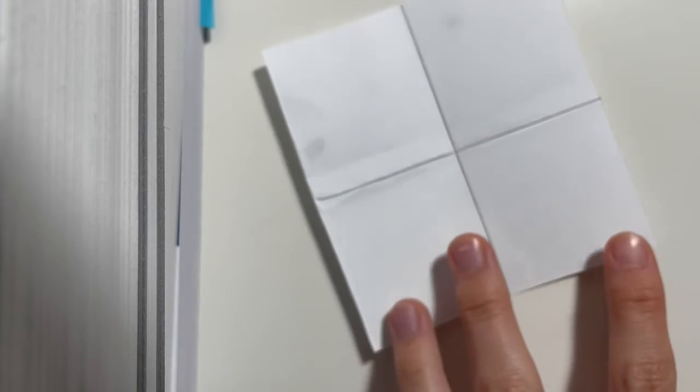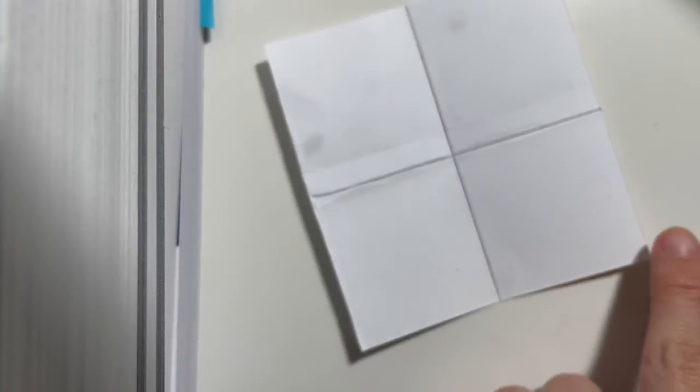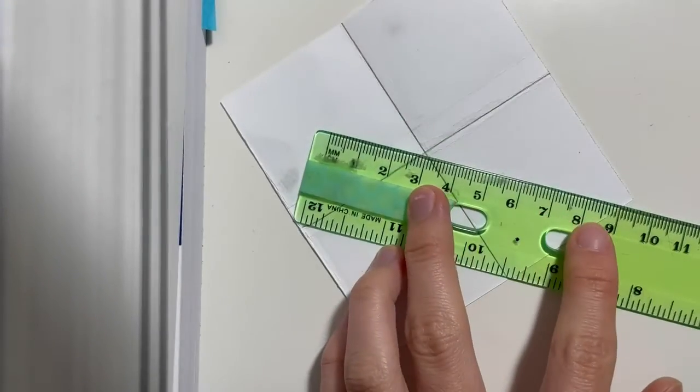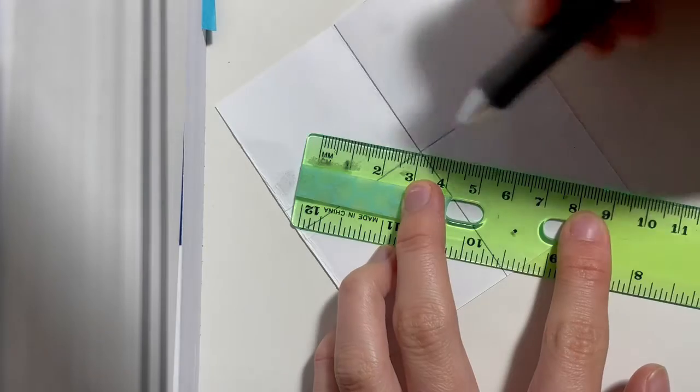Now for one of the sides, we're going to draw a line from the center to the outside, like so.